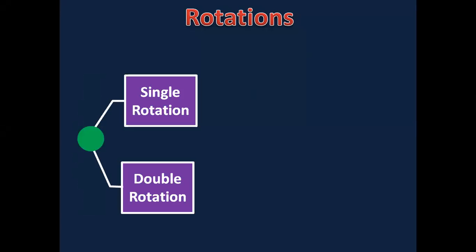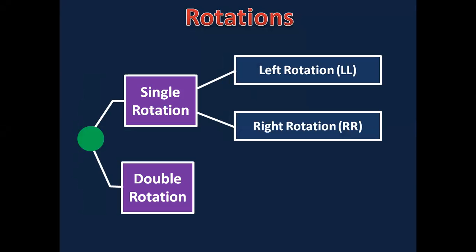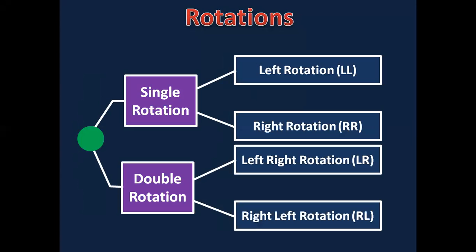Coming to the rotations of AVL trees, we have two types: single rotation and double rotation. Single rotation, which we discussed in the previous session, consists of two further types — left rotation and right rotation. Double rotation involves performing left then right rotation, or right then left rotation. We'll look at examples based on this today.